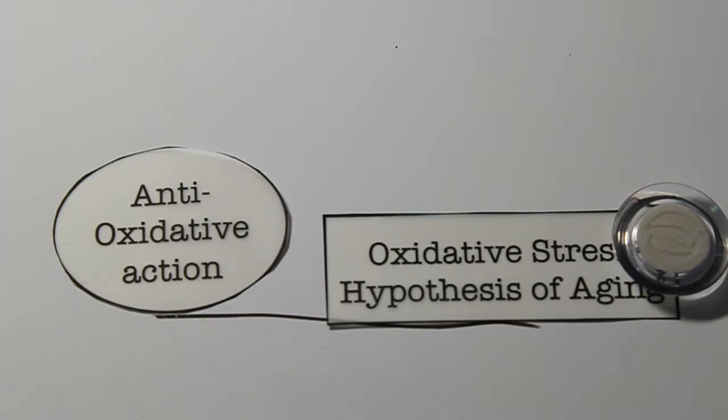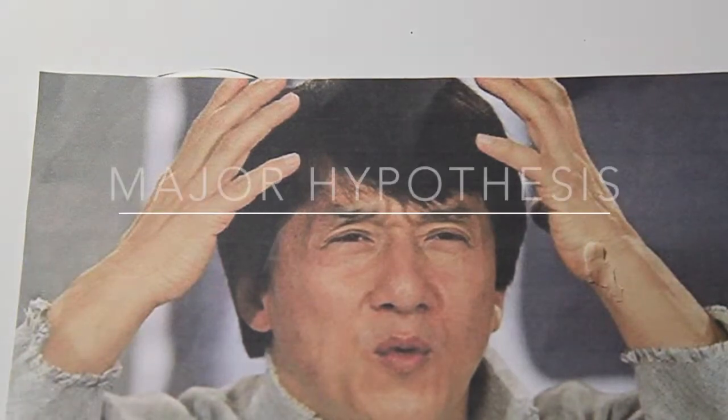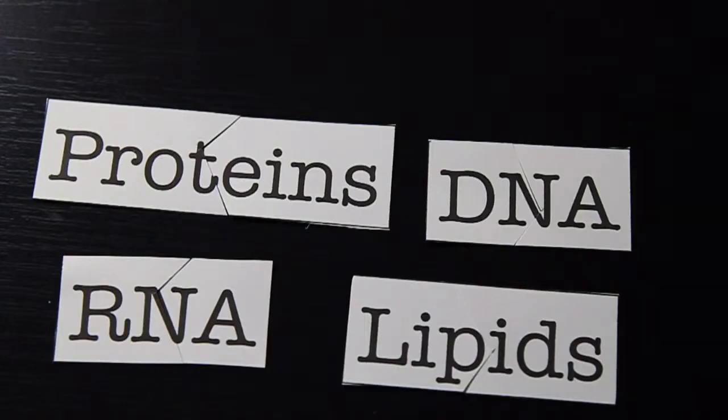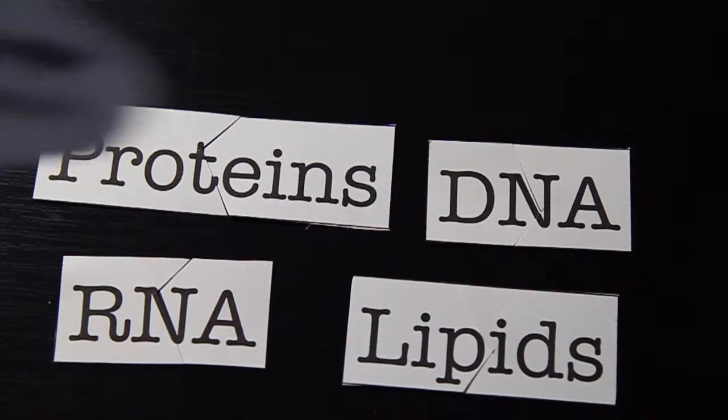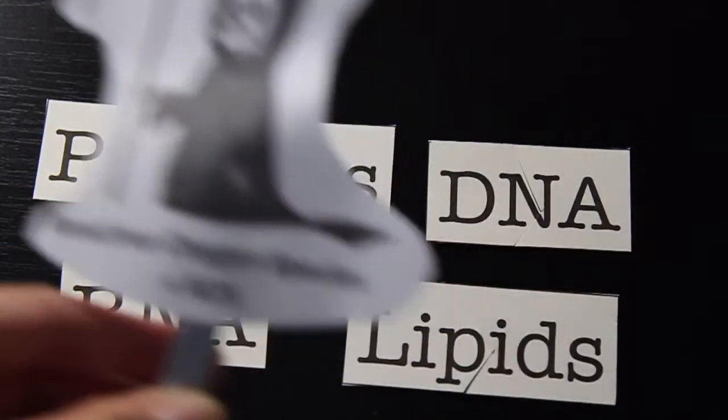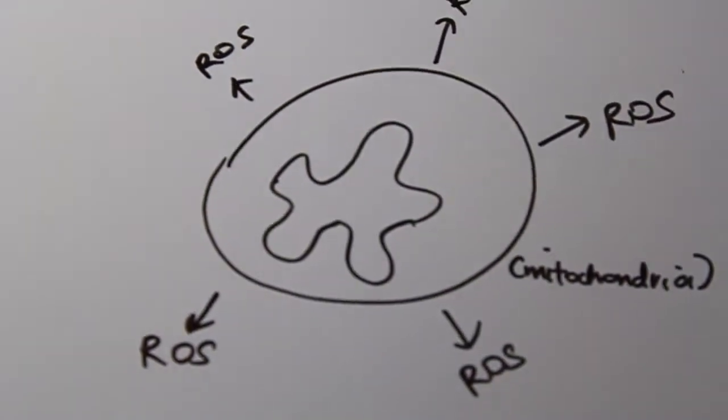You may be wondering now, what's this oxidative stress hypothesis of aging? Well, it is the major hypothesis for why people age. That aging is in fact resultant of the accumulation of macromolecules damaged by reactive oxygen species ROS, and that the major contributor of this oxidative stress is the mitochondria.